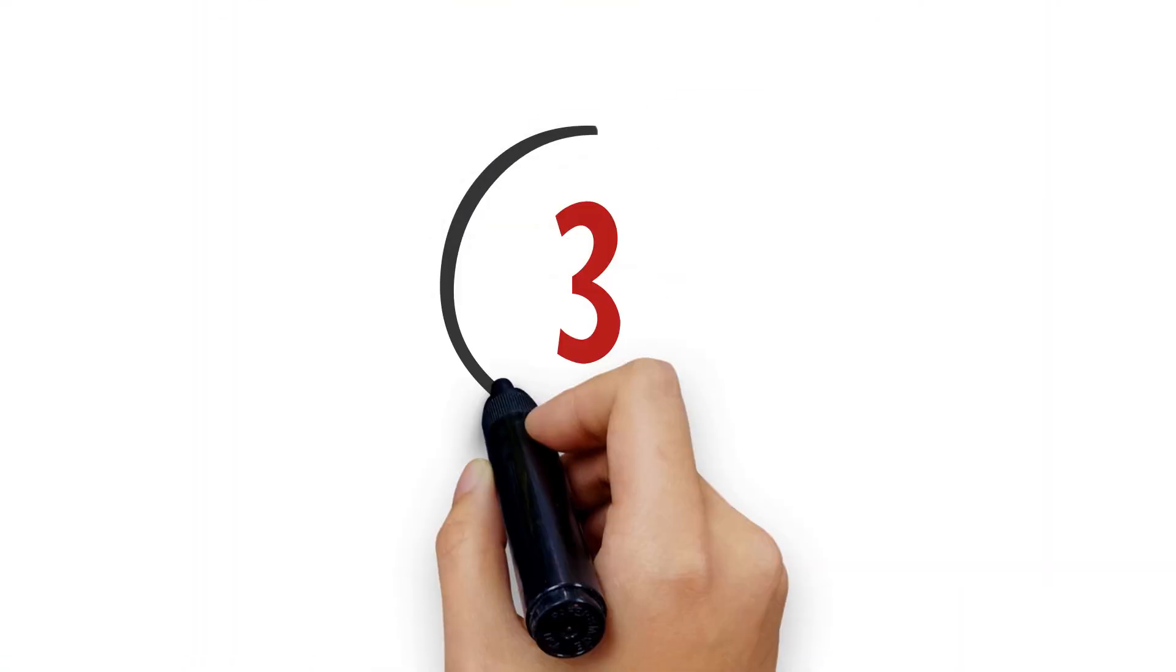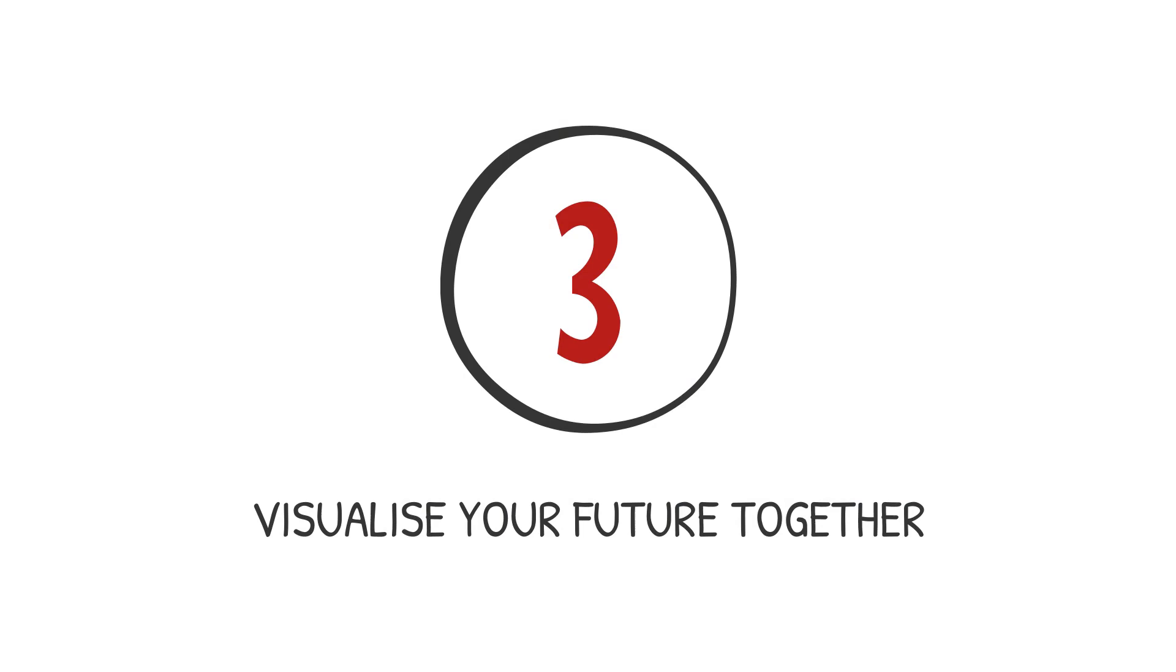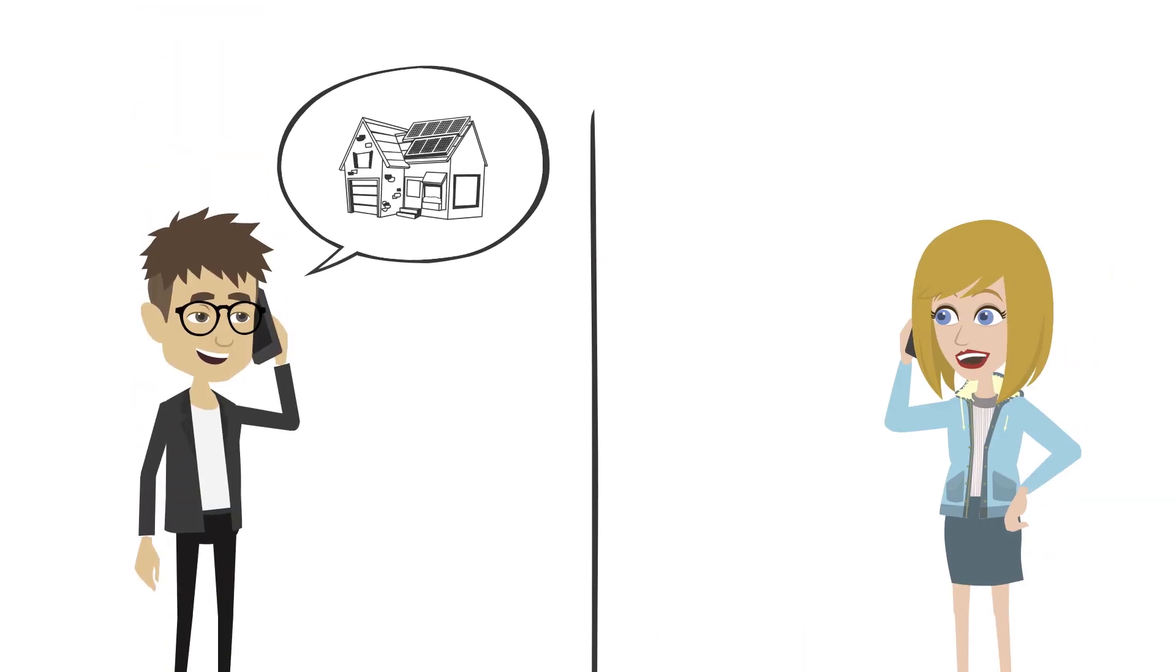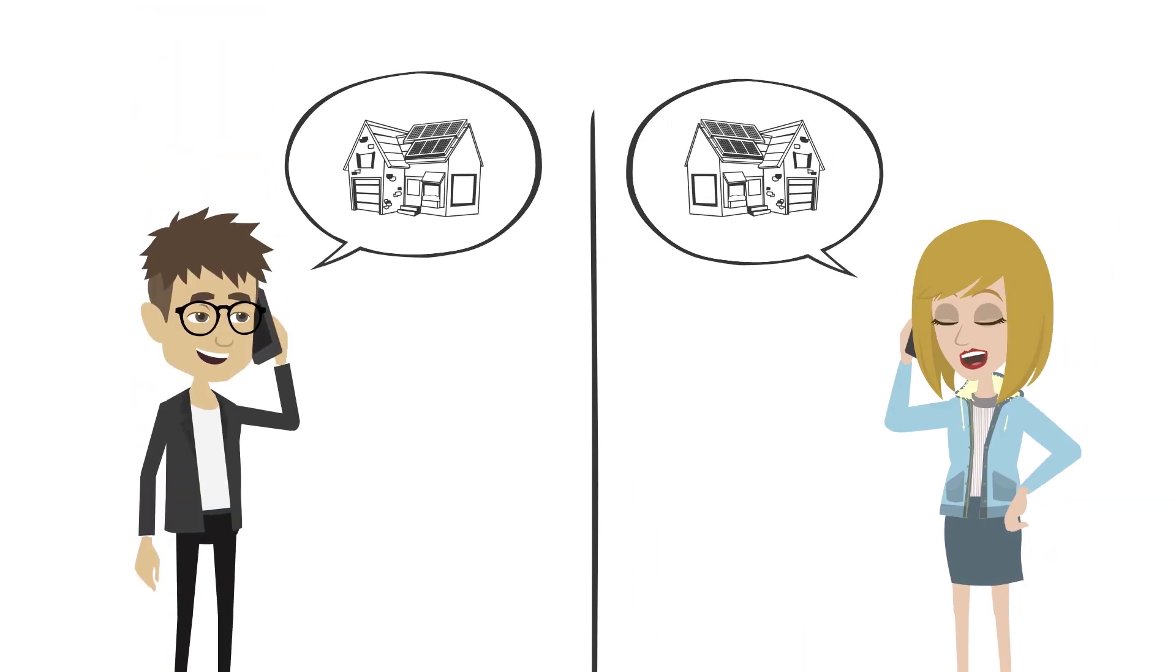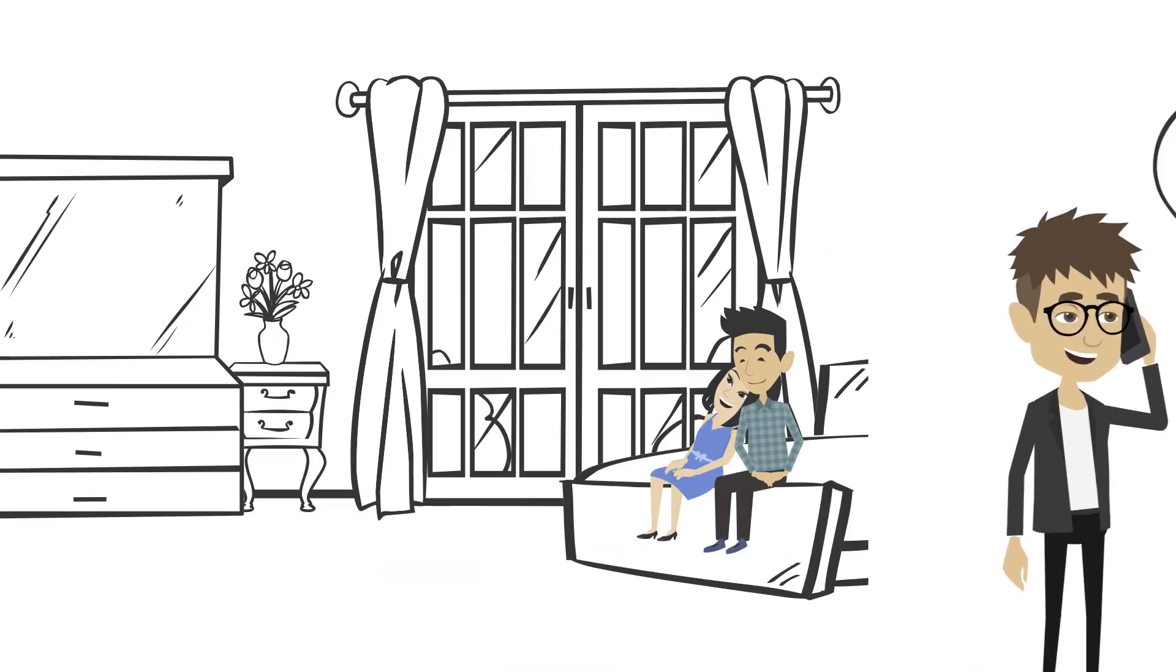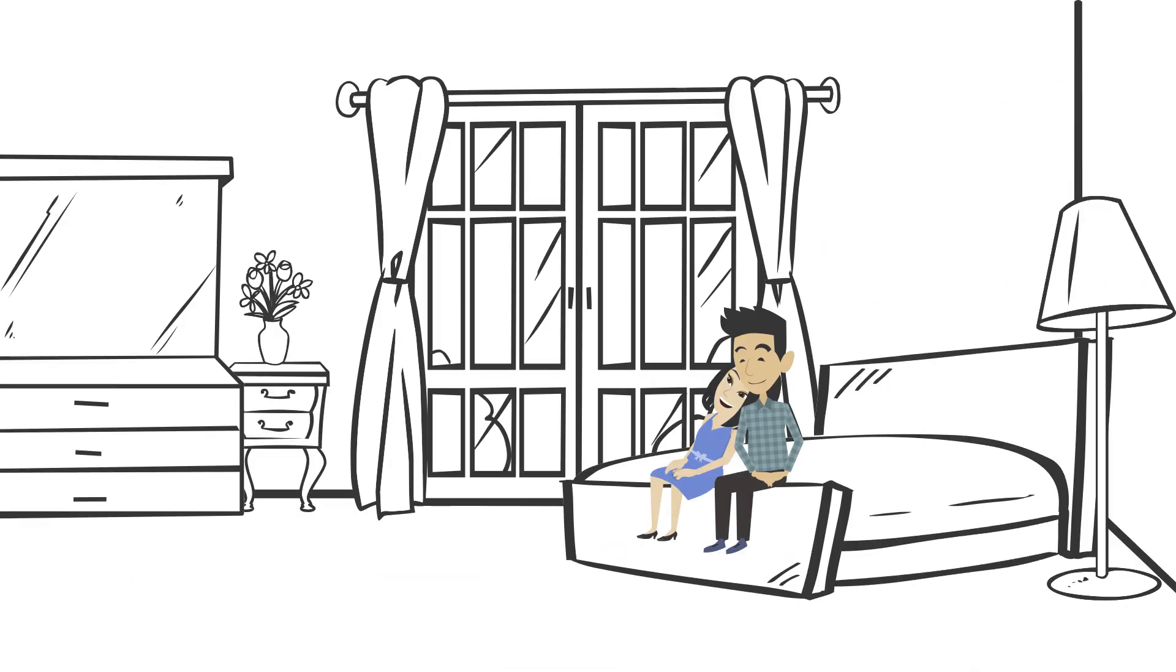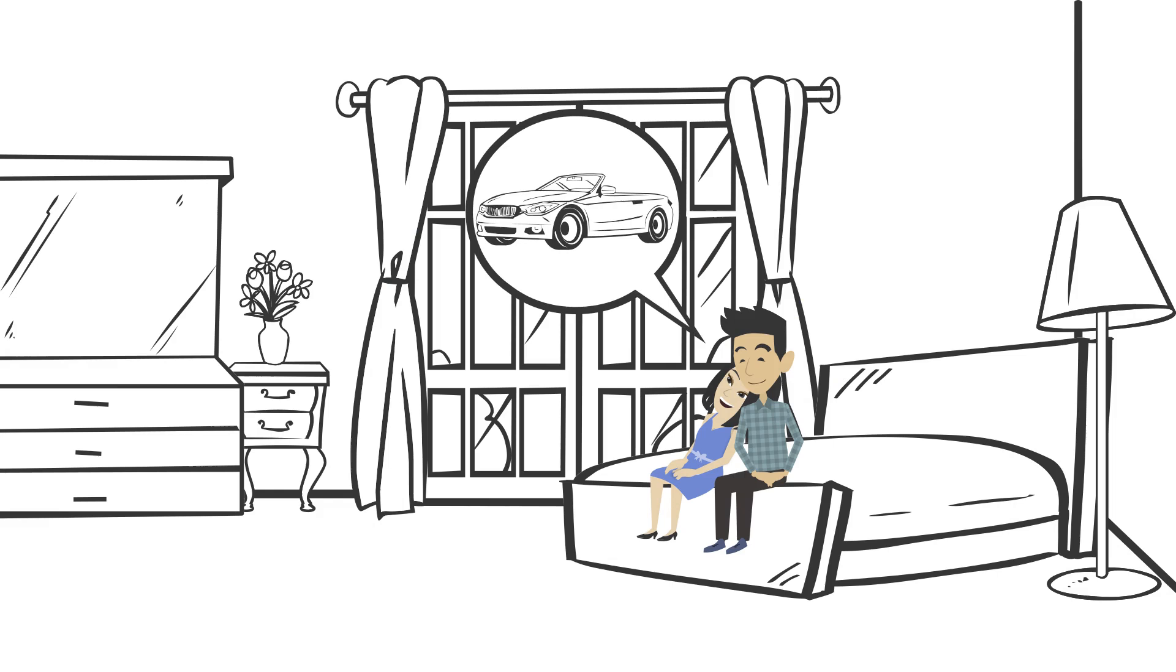Number 3. Visualize your future together. Visualizing your future together can help keep the spark alive in a long-term relationship. Take some time to sit down with your partner and talk about your goals and dreams. Discuss where you see yourselves in the next few years and what steps you can take together to make those dreams a reality.